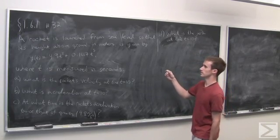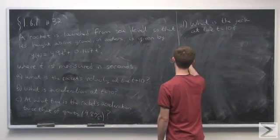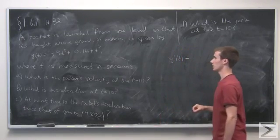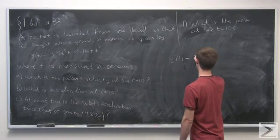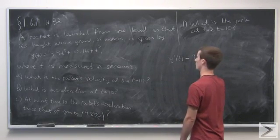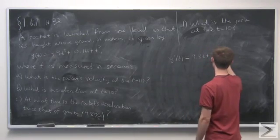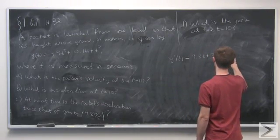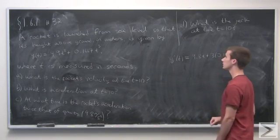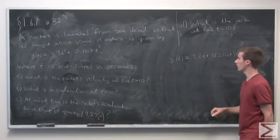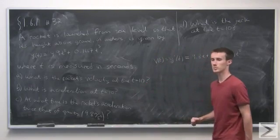The velocity is the derivative of the position function. So we want to find y prime of t, which is going to be 2 times 4.9, or 9.8t, plus 3 times 0.1667 t squared. This will be the velocity at time t.